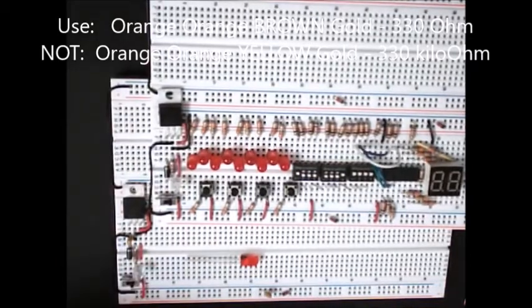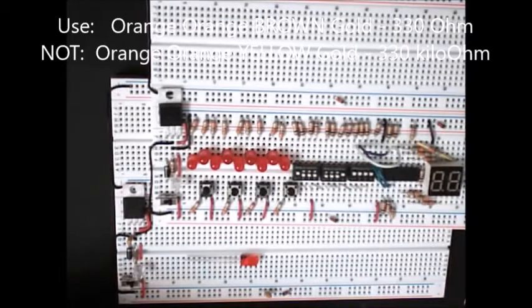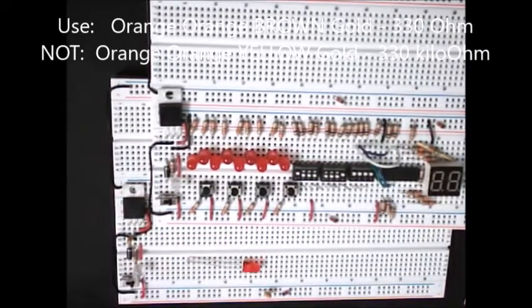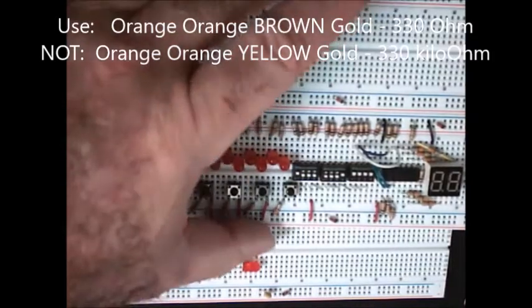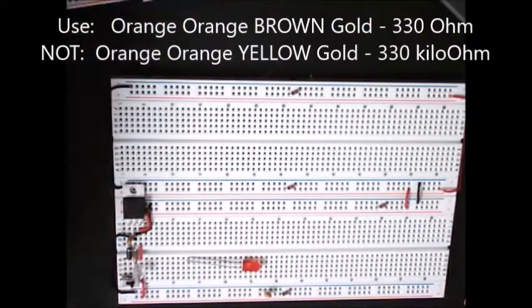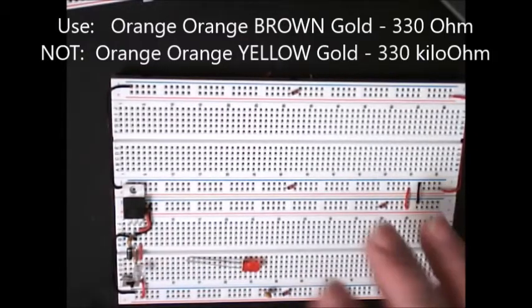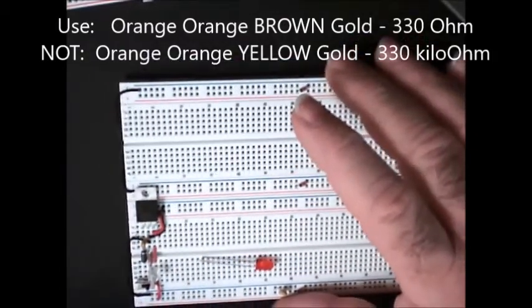330 is orange, orange, brown. Once again, orange, orange, brown. You're going to need nine of them. Cut them long. You're going to need nine LEDs, so go ahead and get them. Stop if you need to, hit pause.